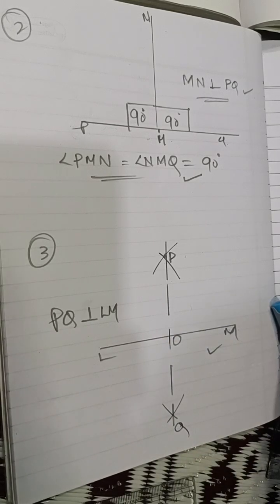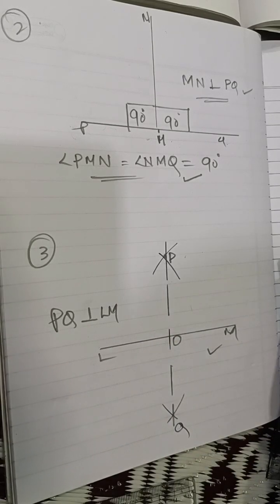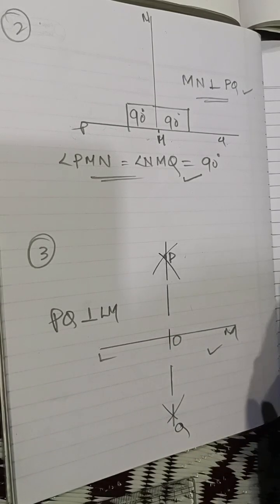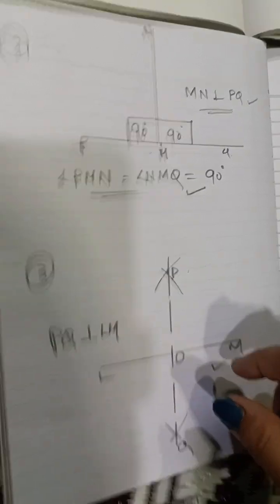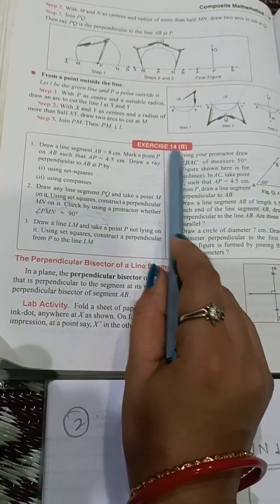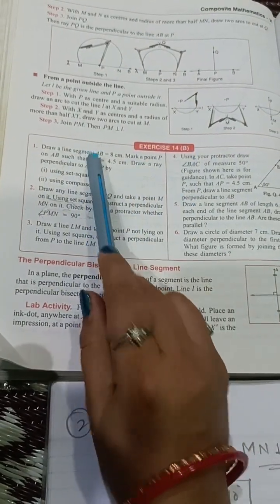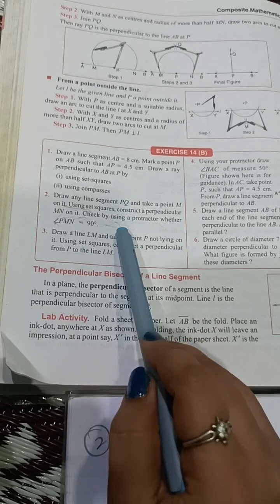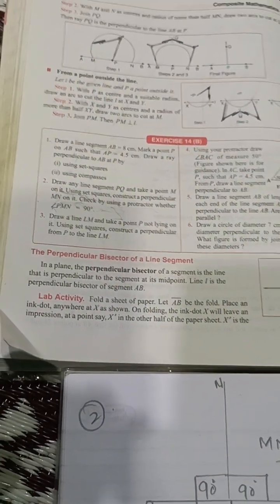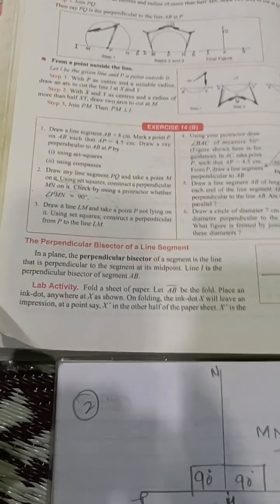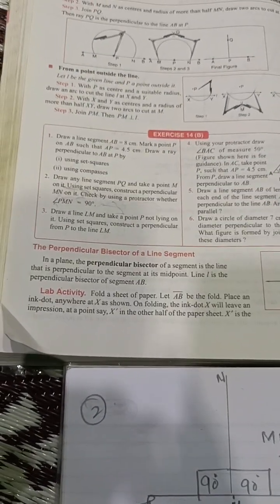Questions number 1, 2, and 3 are done from exercise 14B. All questions from chapter 14 are now complete.